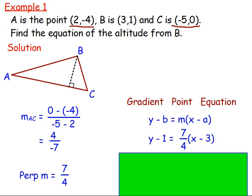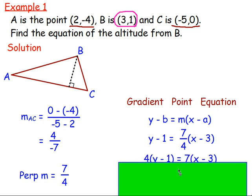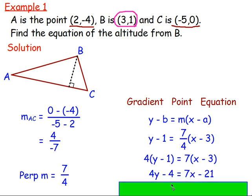So y minus b equals m bracket x minus a. Sub in those values. This time you are using point B, so it's y - 1 equals the gradient 7/4 bracket x - 3. Move the 4 to the other side, or multiply both sides by 4, and we get 4(y - 1) equals 7(x - 3). Multiply out the brackets: 4y - 4 equals 7x - 21. Get it into a form you are familiar with. From this, I would move the -4 over, so add 4 to both sides. So 4y equals 7x - 17.